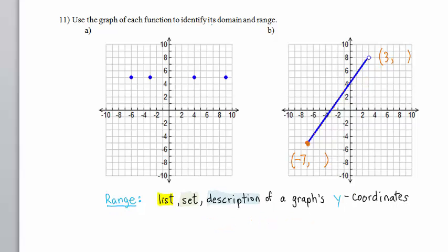Now let's find the range of this function. The range is a list, set, or description of a graph's y-coordinates. We will find the least y-coordinate and the greatest. But instead of looking left to right as we did for the domain, we will look bottom to top.